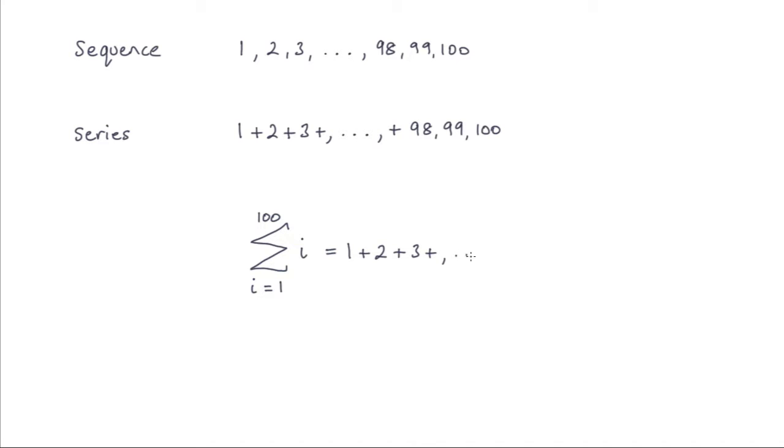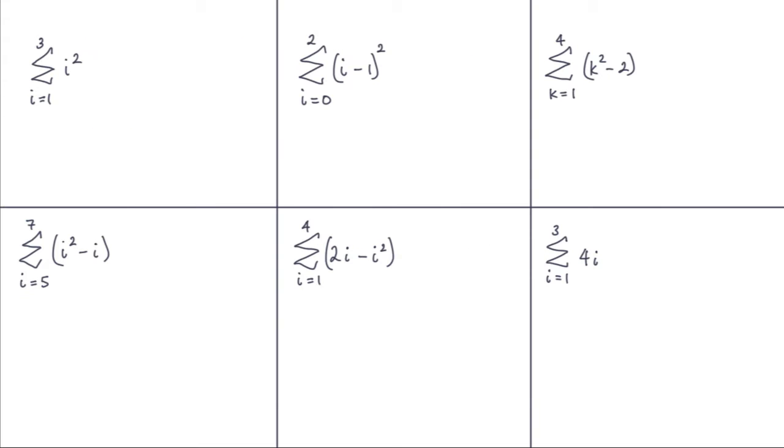And then 4, etc., etc., etc. And we would go all the way to 98, 99, and the final value is 100. So hopefully that sigma notation is fairly self-explanatory. Now what I'm going to do is show you six examples of actually putting this into practice. So let's have a look.